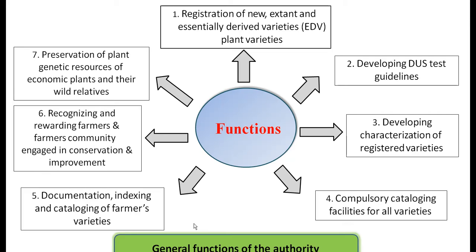These are the general functions of the authority: registration of new, extant, and essentially derived plant varieties; developing test guidelines; developing characterizations of the registered varieties; compulsory cataloging of facilities for all varieties; documentation, indexing, and cataloging of farmers' varieties; and recognizing and rewarding farmers and farmer communities engaged in conservation and preservation of plant genetic resources of economical plants and their wild relatives.